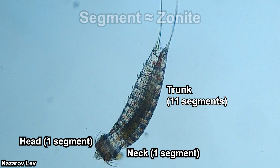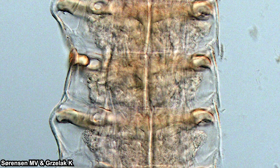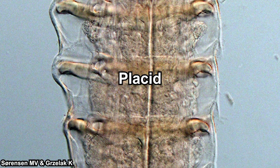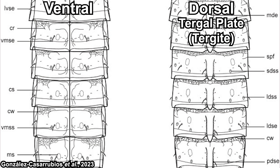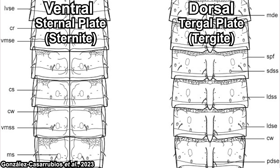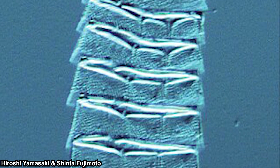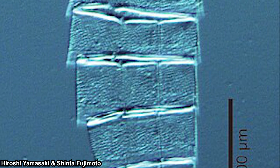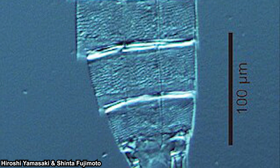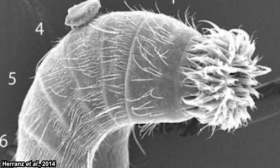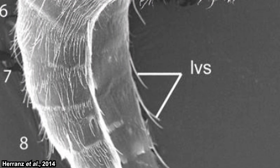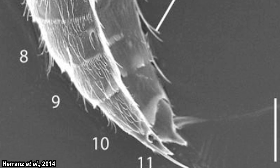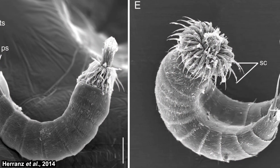Their segments are also known as zonites. These segments or zonites are covered with plates called placids. The dorsal placids are called tergal plates, or tergite, and the ventral placids are called sternal plates, or sternite — basically the same terms used for many arthropods. These placids are composed of a chitinous basal layer and epicuticula, which gives them a rigid exoskeleton with enough articulation to be somewhat flexible. They have some spicules or spines on their trunk, and most also have terminal spicules or spines on their posterior.